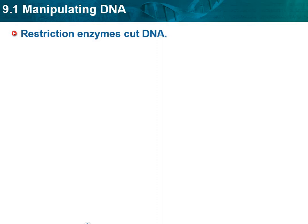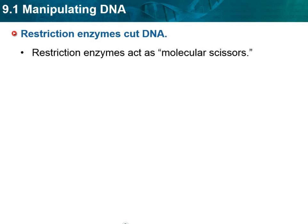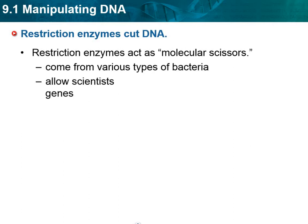One thing that we use is restriction enzymes. Restriction enzymes are enzymes that cut DNA at particular spots — they are known as molecular scissors. They were discovered because bacteria use them to fight off viruses; the bacteria had these enzymes that would chop up the viral DNA so it wouldn't get infected. They come from various types of bacteria and allow scientists to more easily study and manipulate genes by chopping DNA into more manageable sizes. Cutting DNA at a specific nucleotide sequence is called a restriction site.